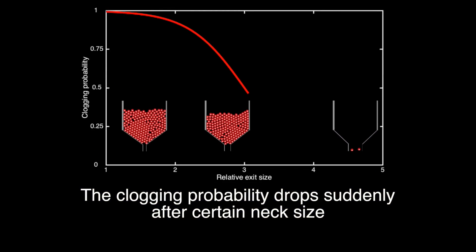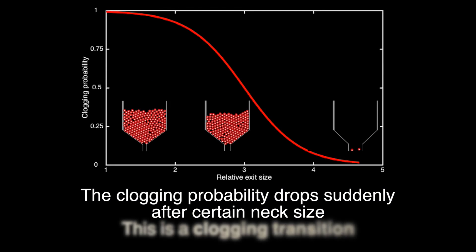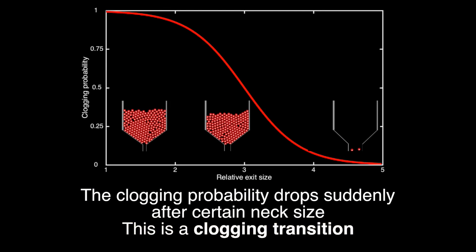And this change of behavior from clogging to flowing is what we call a clogging transition.